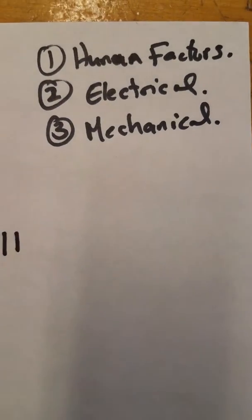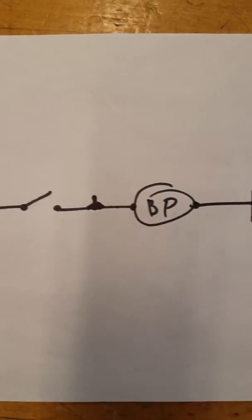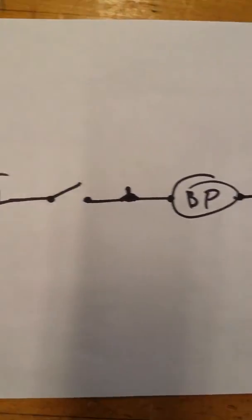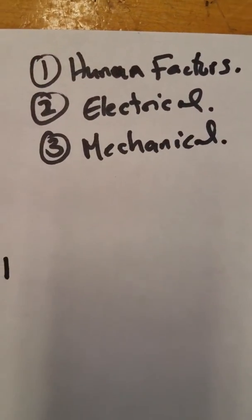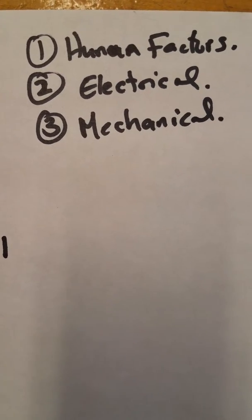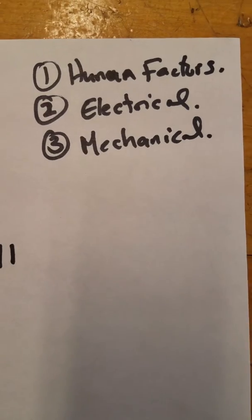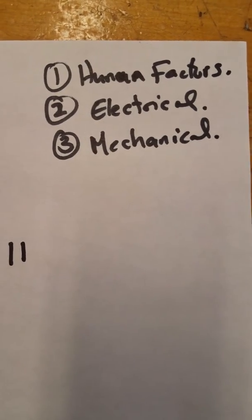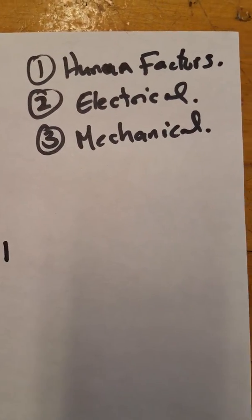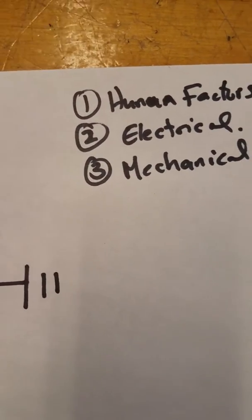This is a little explanation of how to troubleshoot a basic system such as a boost pump. The drawing isn't very great but it does give you an idea of what goes on. There are basically three reasons why a boost pump, a light bulb, or any electrical component would not work. Most people think of two reasons: electrical and mechanical.